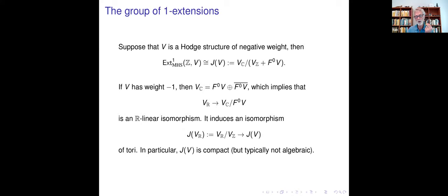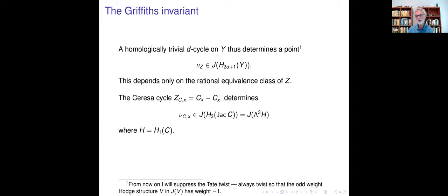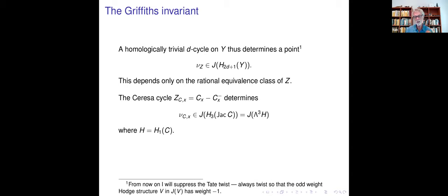J(V) is the group of extensions. If you have a homologically trivial cycle, it gives you a point in there, and this point depends only on the rational equivalence class of the cycle. So this tells you that the Tseresa cycle determines a point in the Jacobian of H₃ of the Jacobian. I'll write this as J(Λ³H). So H₃ of the Jacobian is the third exterior power of H₁, and I'll denote H₁ by H. Just to avoid cumbersome notation, I'll always twist these so they have weight minus one.